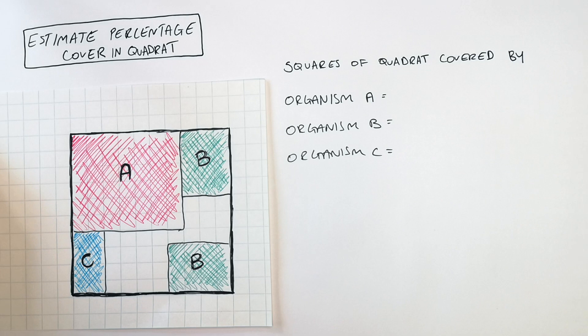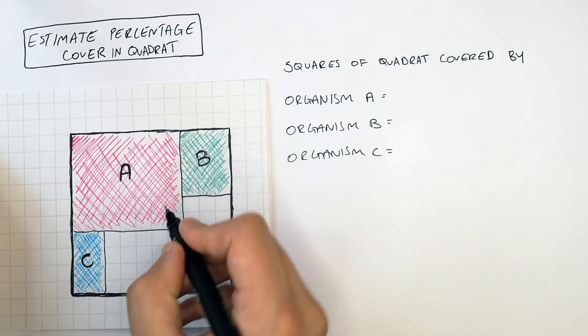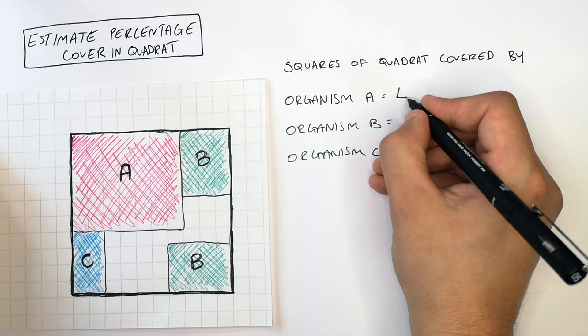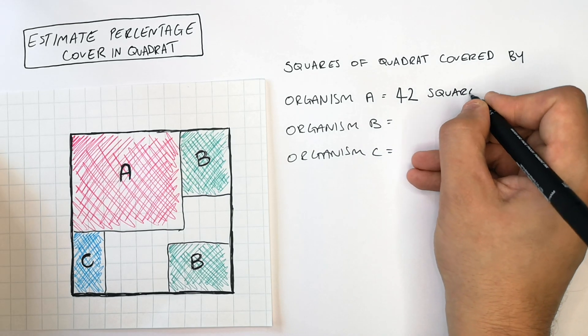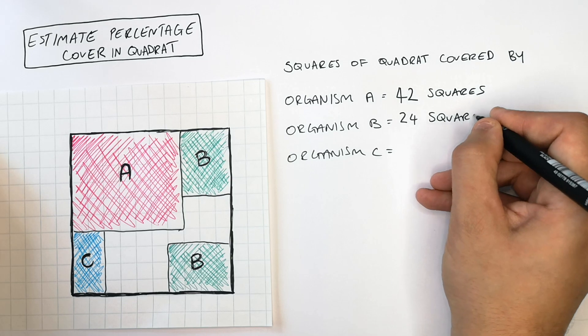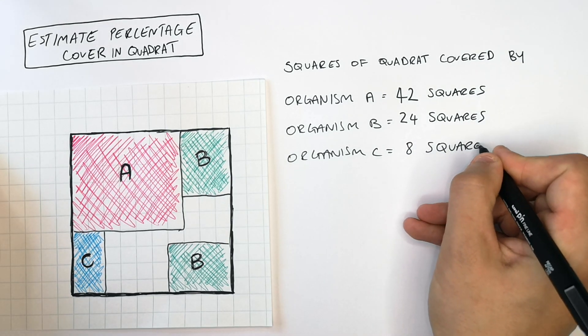So what is the percentage cover within the quadrat? Well you firstly count the number of squares in which you see organism A. So this one is going to be 42 squares. Organism B has a total percentage cover of 24 squares and organism C has a percentage cover of 8 squares.